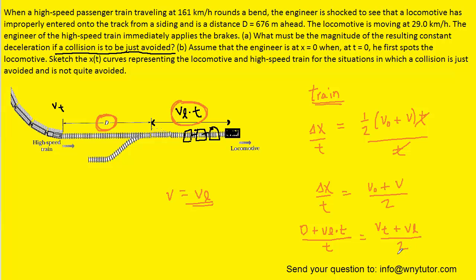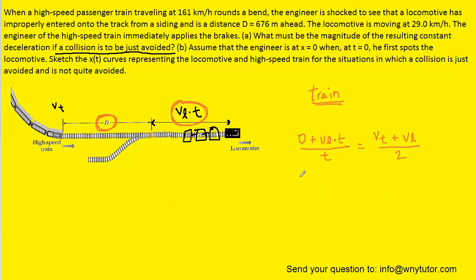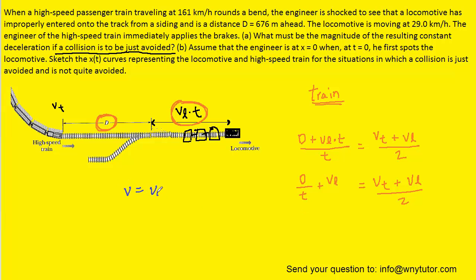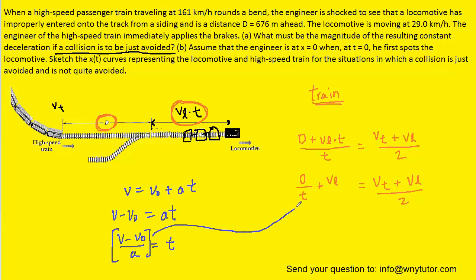Dividing by 2 on the right side, we now have the equation set up. However, this doesn't yet include acceleration, which is what we're trying to find in part A. Turning to another kinematic equation and solving it for time t — by subtracting v-naught from both sides and dividing by acceleration A — we get an expression for t that includes acceleration. We'll substitute that expression for time into the earlier equation.